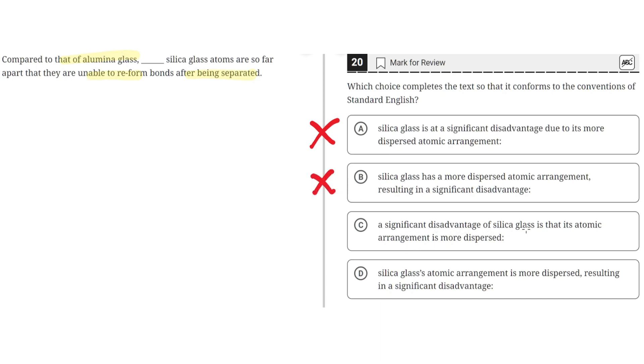C. A significant disadvantage of silica glass is that its atomic arrangement is more dispersed. This is incorrect for the same reason as B and A where it should have silica glass's atomic arrangement right after the comma, but instead it has something else resulting in a dangling modifier. So C is incorrect.